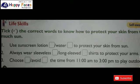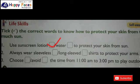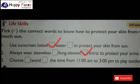Life Skills: Think of the correct words to know how to protect your skin from too much sun. Number 1: Use sunscreen lotion - tick on lotion to protect your skin from the sun. Number 2: Always wear a long sleeve shirt to protect your arms - tick on long sleeve shirt. Number 3: Choose to avoid the time from 11 am to 3 pm to play outdoors - tick on avoid.